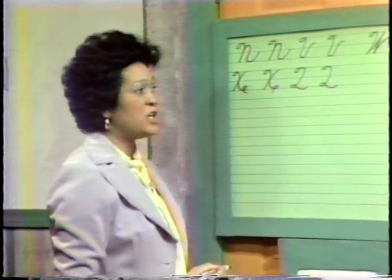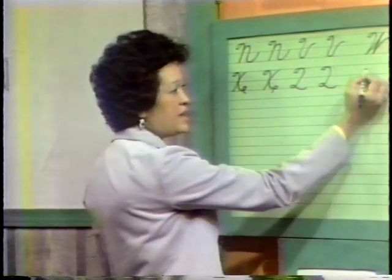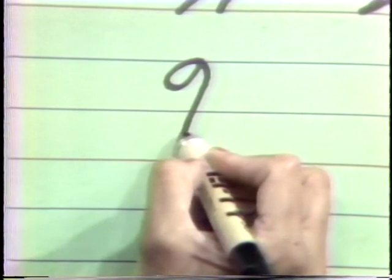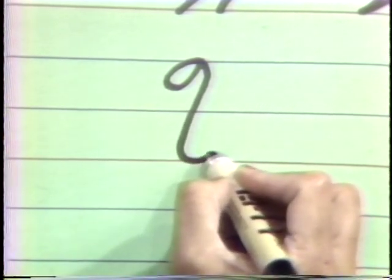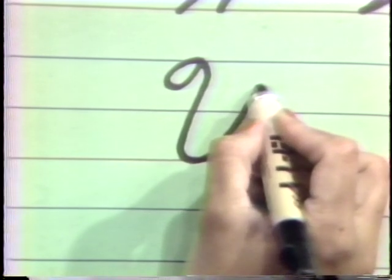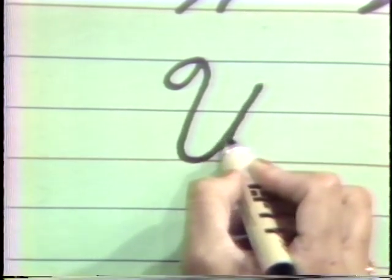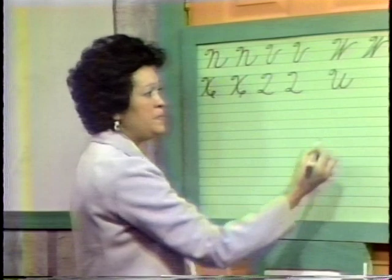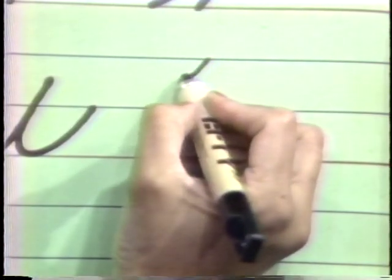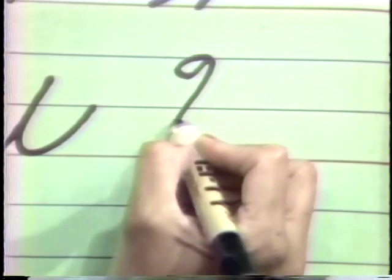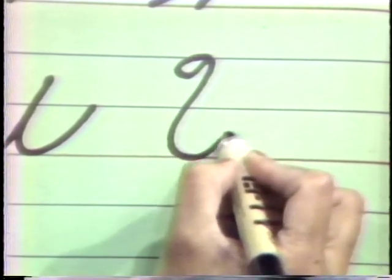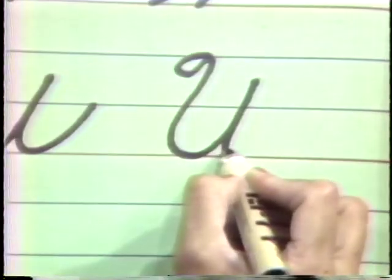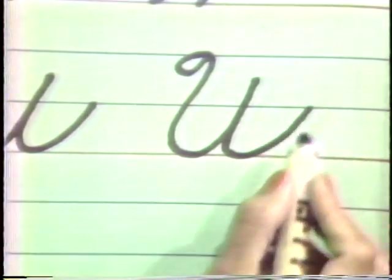The next letter will be U. Are you ready? Start at your headline with a slanted vertical loop. Come all the way down to your baseline. Now I'm going to stop halfway between the midline and the headline. Retrace, coming back to your baseline and stopping at your midline. U. Start at your headline with a slanted vertical loop, going all the way down, stopping halfway between the midline and your headline, retrace, and stop at your midline. Capital U.